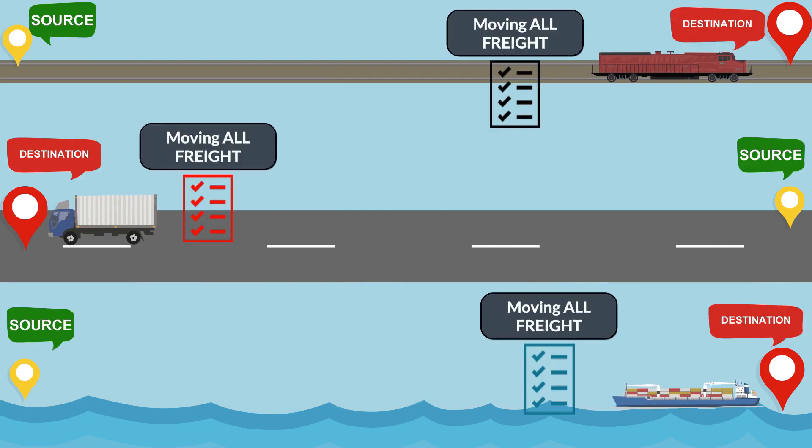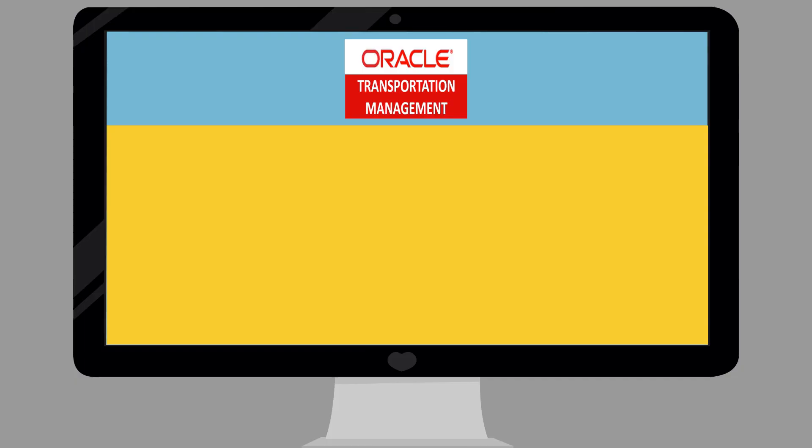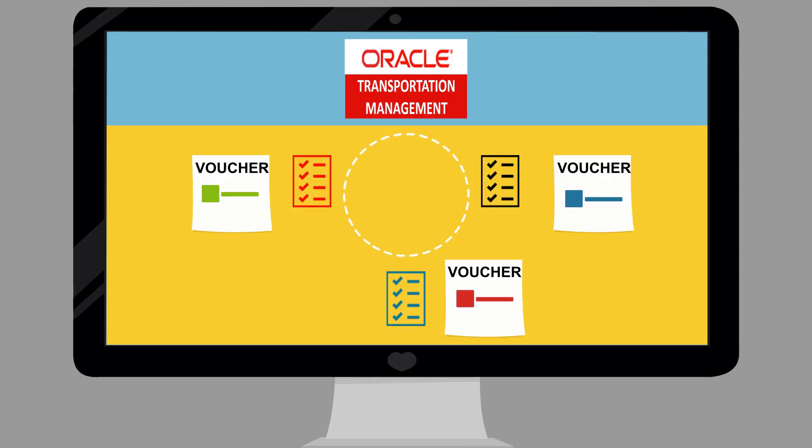The invoices are processed within OTN, and three vouchers are created corresponding to each invoice. The vouchers are then sent to an accounts payable system for payment to the carriers.